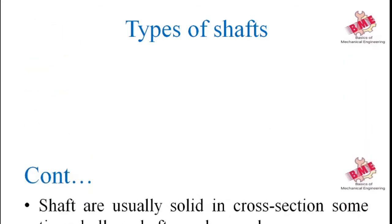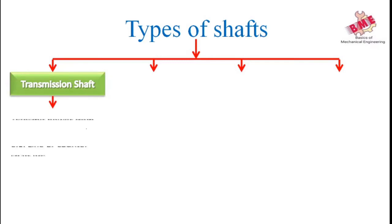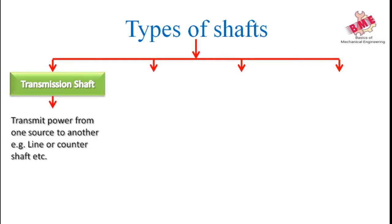Now we will see types of shafts. There are mainly four types. The first is the transmission shaft, which is used to transmit power from one point to another — that is, from the source of power to the absorbing device. For example, an electric motor is the source and a water pump is the absorbing device. It supports transmission elements like gears, pulleys, and sprockets. Examples include line shafts, counter shafts, and overhead shafts.